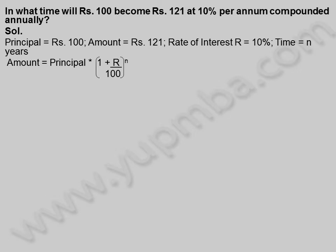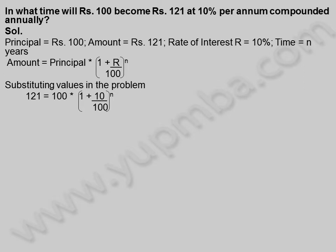Amount is equal to Principle into 1 plus rate by 100, whole power n. Substituting values in the problem: 121 is equal to 100 into 1 plus 10 by 100, whole power n.